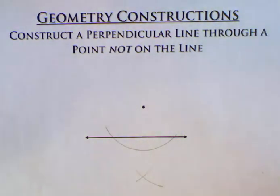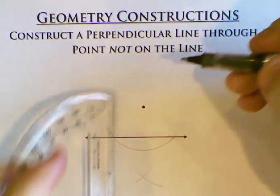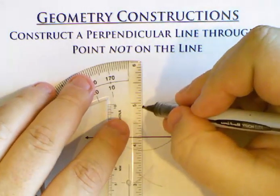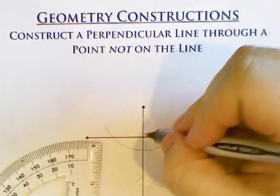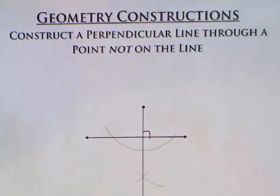Now like the last one I don't need to put another set of arcs up here because I can just go through this single point and the one set and that's the perpendicular that goes through the point that is not on the line.